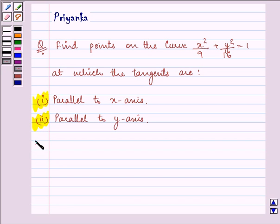Let's start with the solution. Let us first solve it for the first part. We are given the curve's equation as x²/9 + y²/16 = 1.